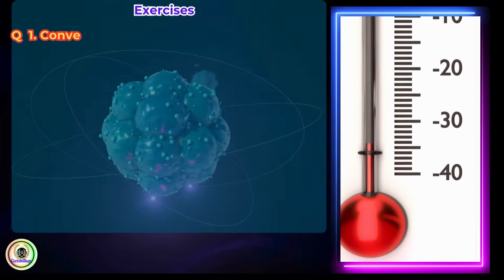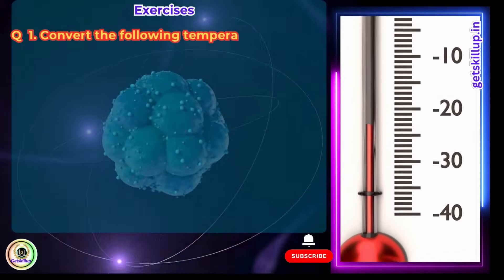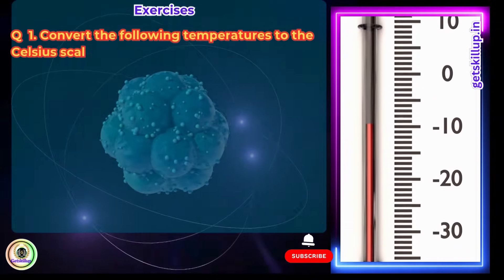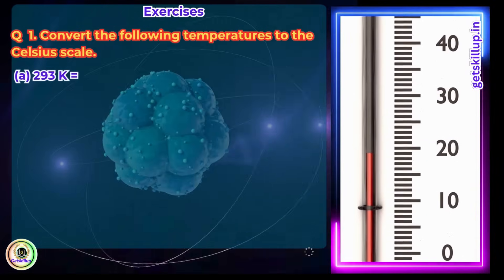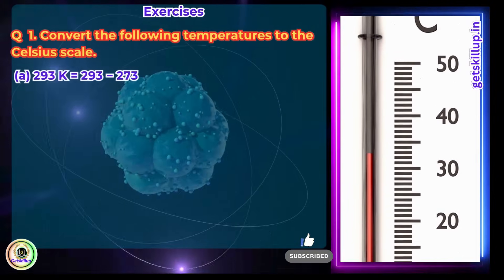Exercises. Question 1: Convert the following temperatures to the Celsius scale. a. 293K. Answer: 293K equals 293 minus 273 equals 20 degrees Celsius.